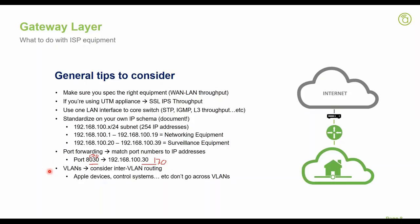One important consideration with VLANs is inter-VLAN routing — please watch our VLANs webinar and read the documentation in the support tab. One critical thing to be aware of: Apple devices, some control systems, and streaming services do not play well across VLANs. For example, if you have an Apple TV on one VLAN and iPhones on another VLAN, AirPlay and AirPrint will not work across VLANs. Some control systems also don't scan across VLANs because they use mDNS technology which doesn't work across VLANs. Be very aware of inter-VLAN traffic when you implement VLANs.